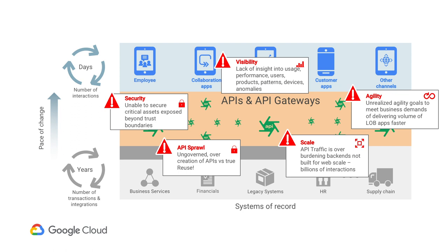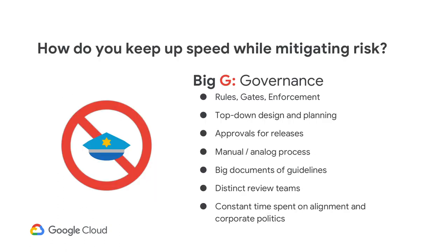It's a real problem. The more APIs you create, the more security holes you create, especially if you're doing them all differently. A lot of companies are looking at the typical IT method — big G governance — putting rules, gates, and enforcements in place, making sure there are approvals for releases and lots of manual reviews with big documents and lots of corporate politics. This is kind of a problem: we've got all these security concerns, we've got to go fast, but because of that security concern, now we have this big cop in the middle, and that can be really detrimental.